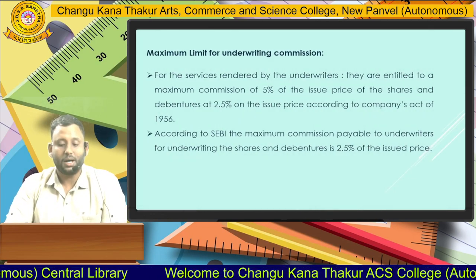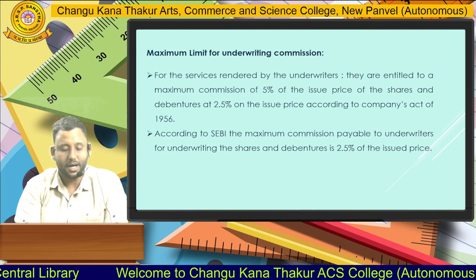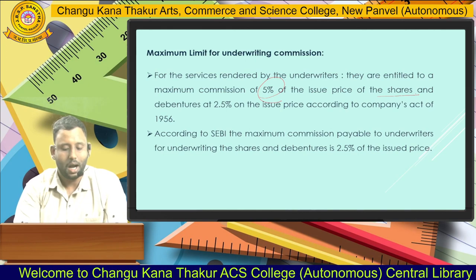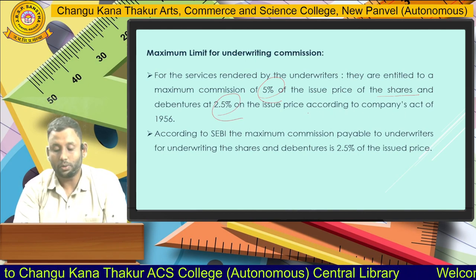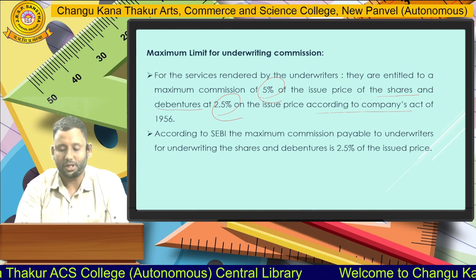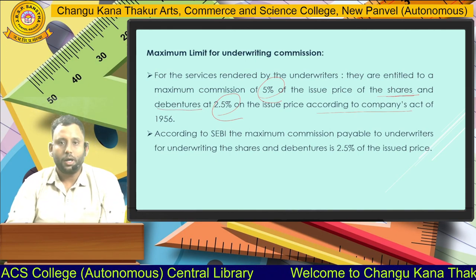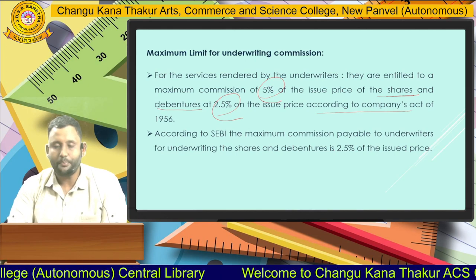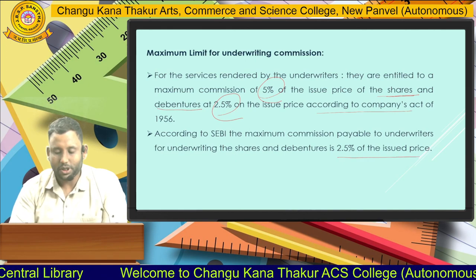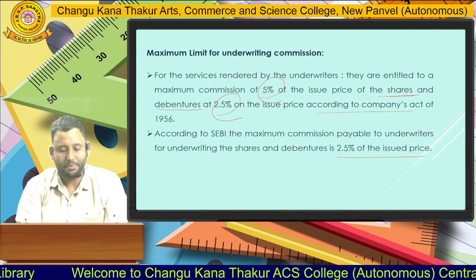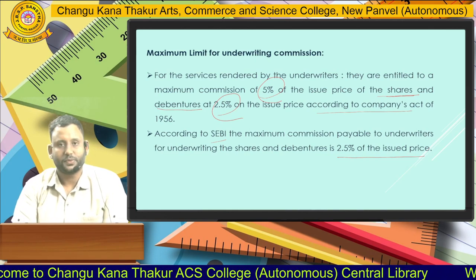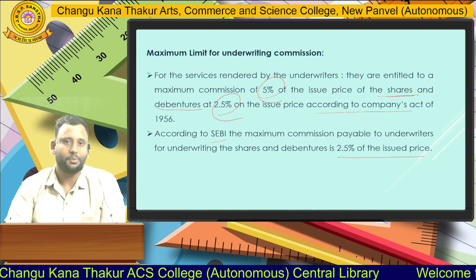The maximum limit for underwriting commission: underwriters are entitled to a maximum commission of 5% on the issue price of shares and 2.5% on the issue price of debentures, according to the Companies Act. According to SEBI, the maximum commission payable to underwriters for underwriting shares and debentures is 2.5% of the issue price for both shares and debentures.